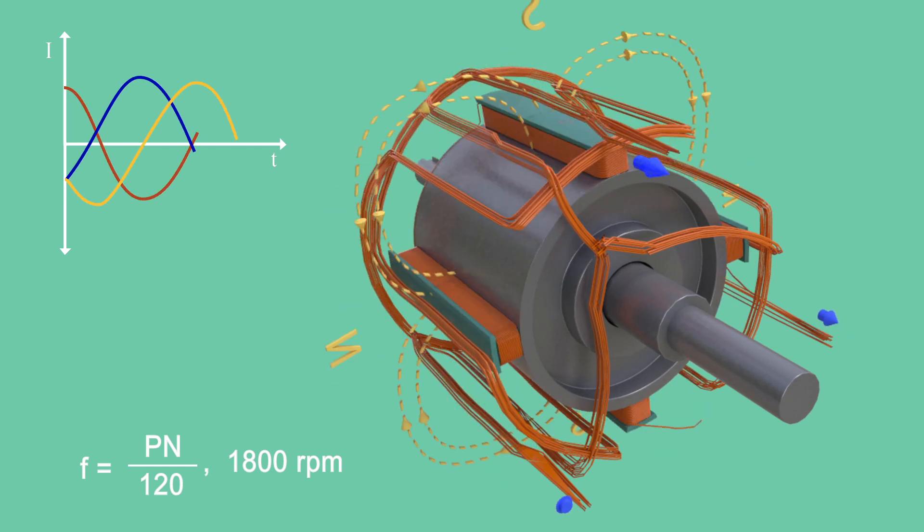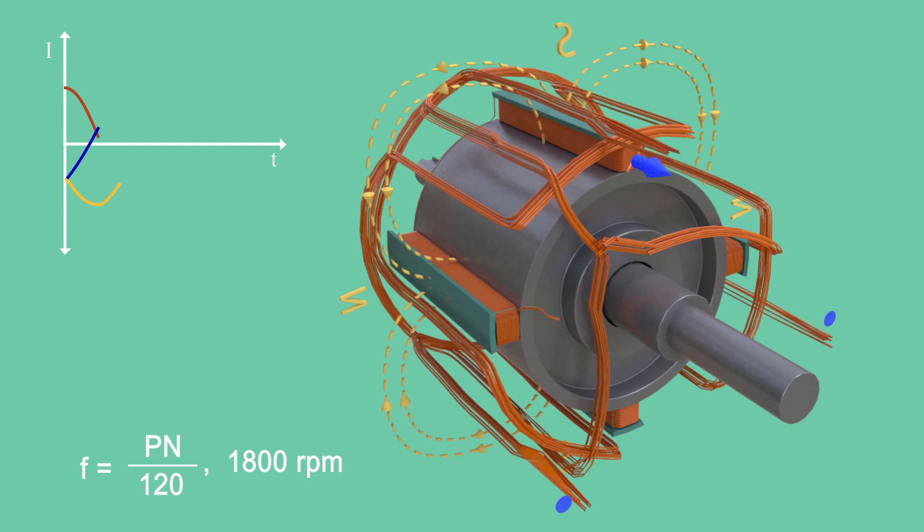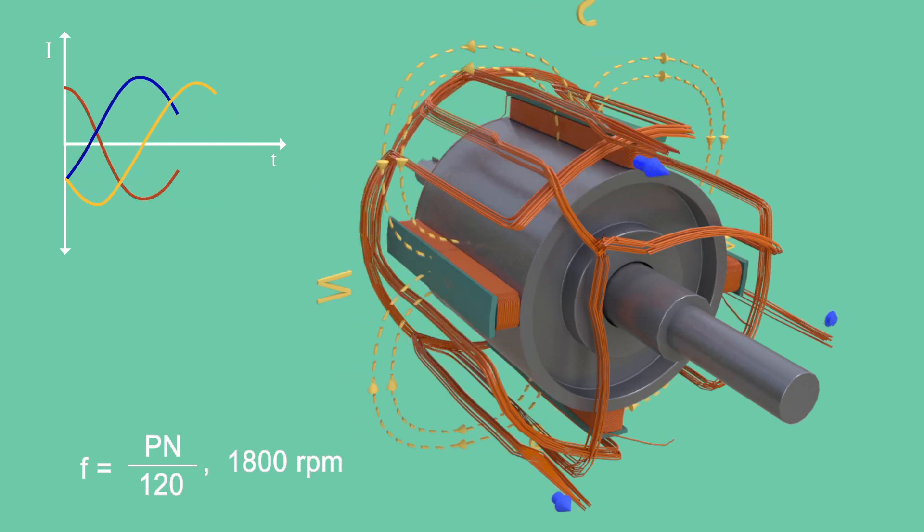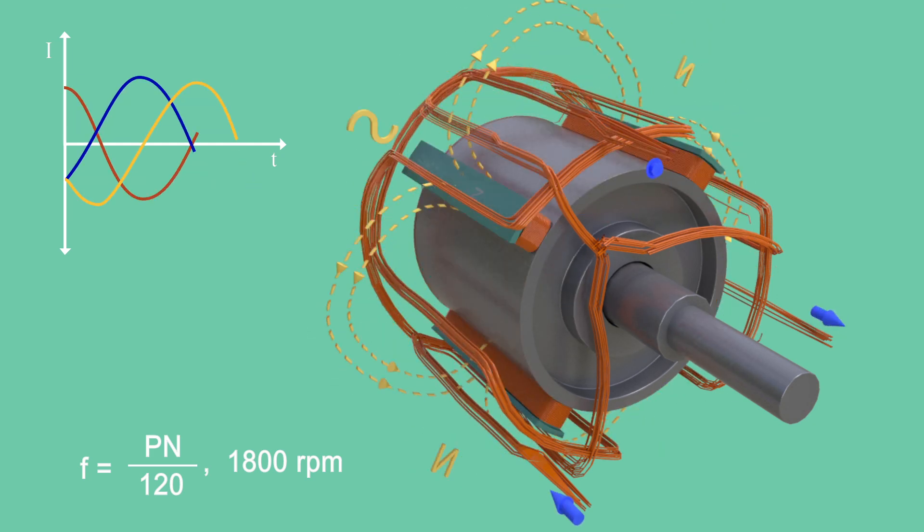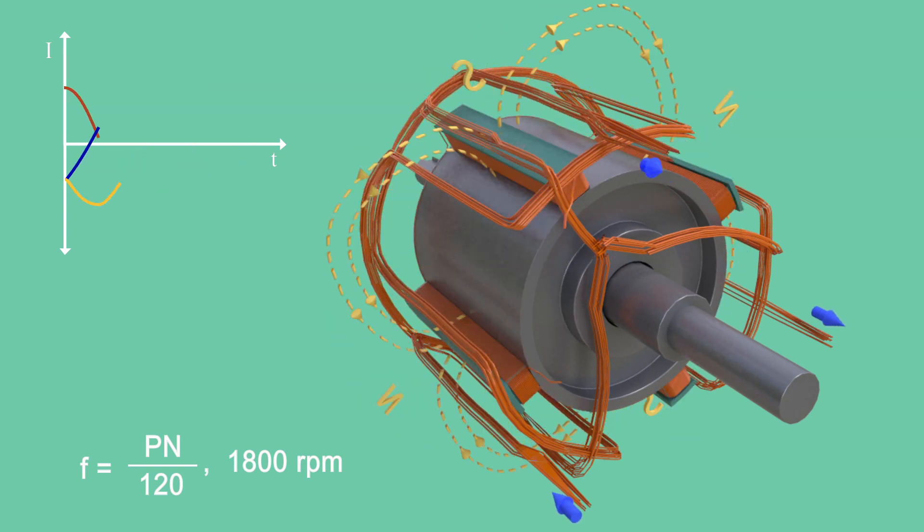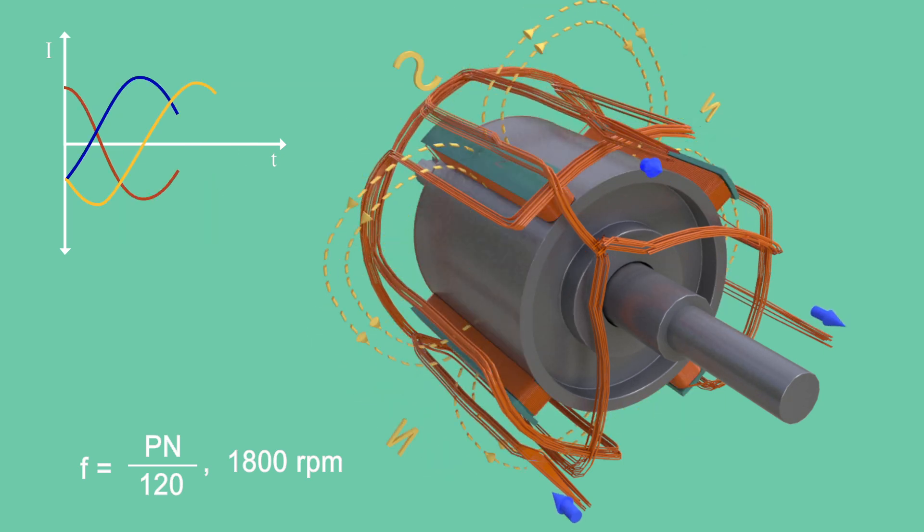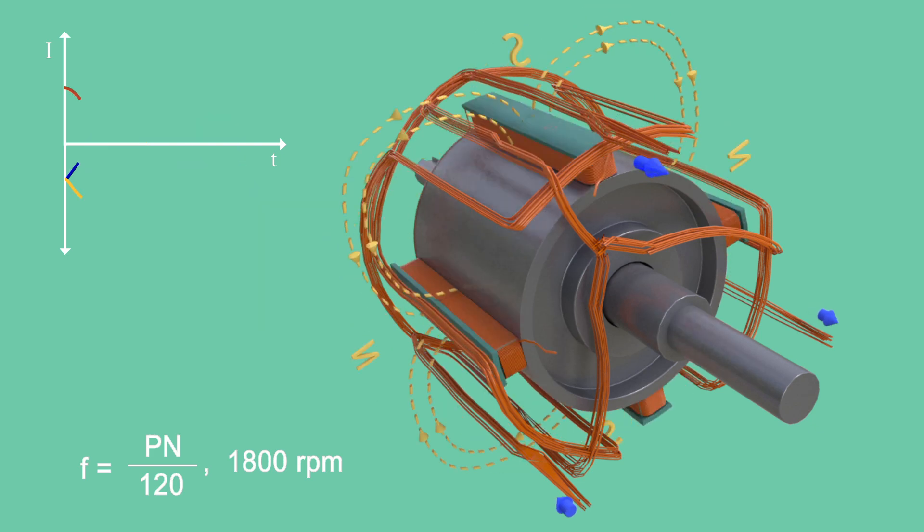So salient pole rotors generally have 10 to 40 poles, which demands lower RPM. Salient pole rotors are used when the prime mover rotates at relatively lower speeds from 120 to 400 RPM.